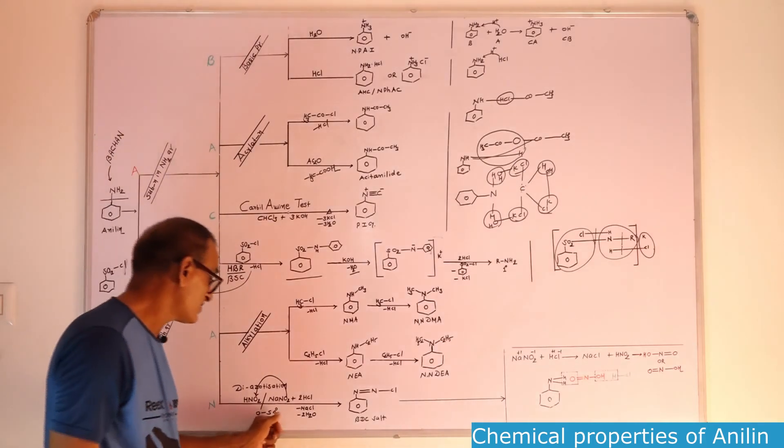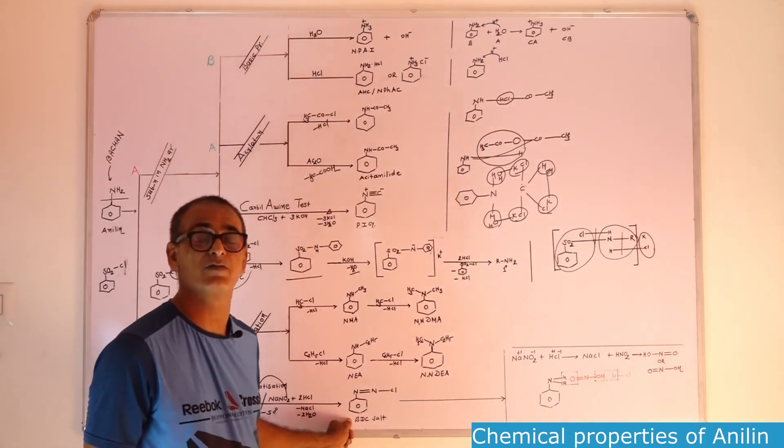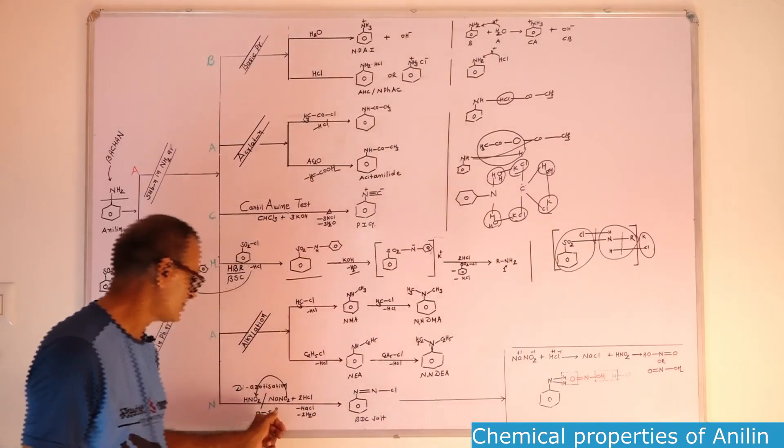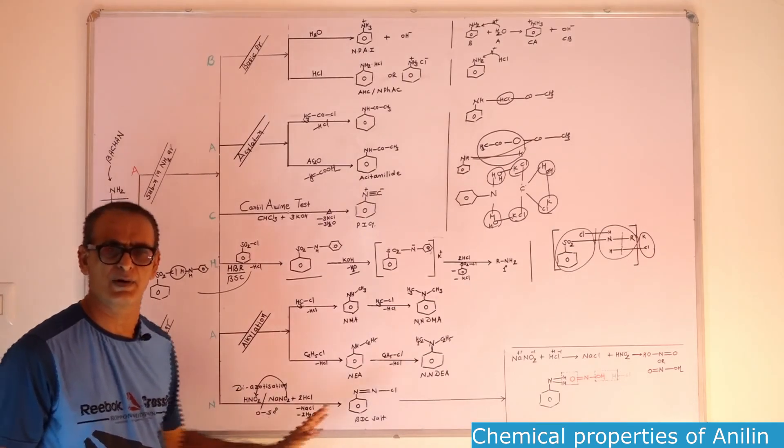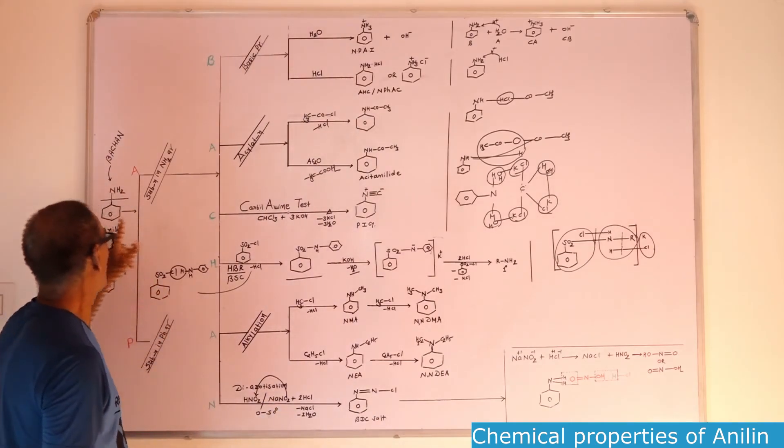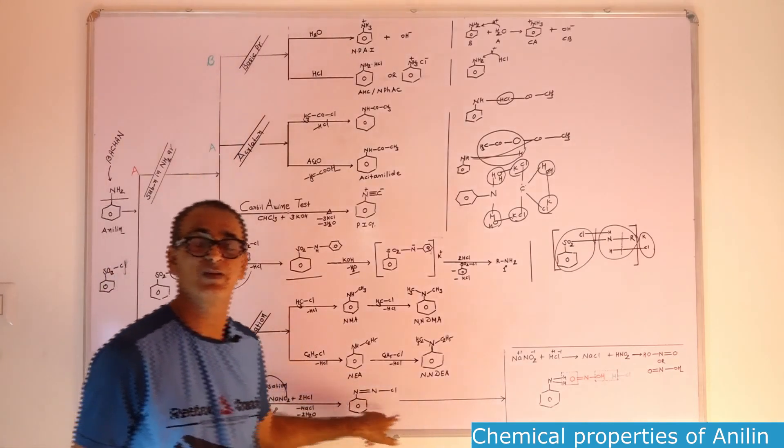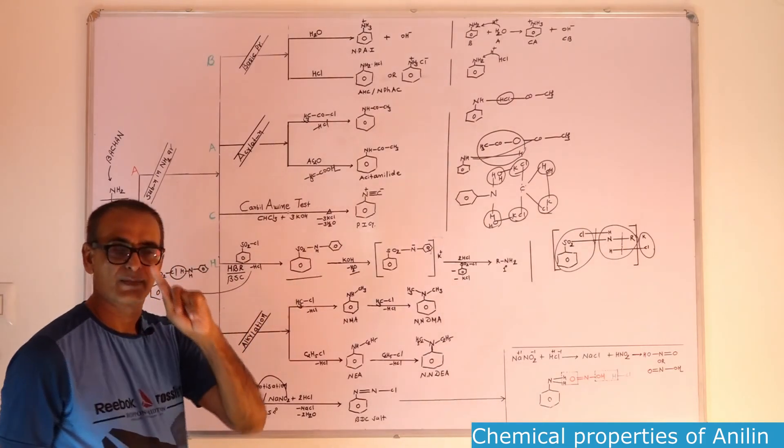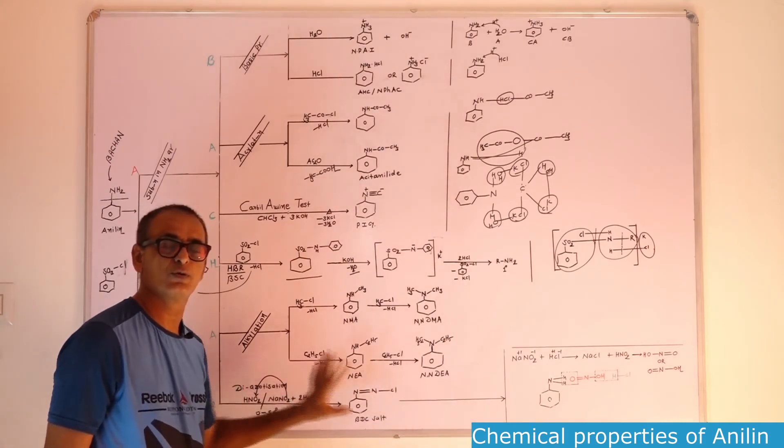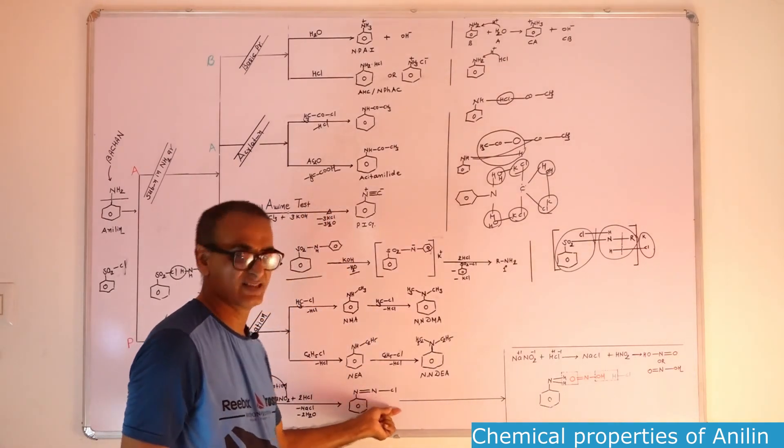This reaction always carried out at zero to five degrees centigrade, lower temperature. If the reaction temperature is high, then the stability of this salt will be less. If you want to gain stable salt, then compulsory temperature should be kept down. Primary aniline NH2, NH2 conversion to N=N-Cl. But you see, this is a very very important reaction. In aniline, NH2 converted into N=N-Cl.